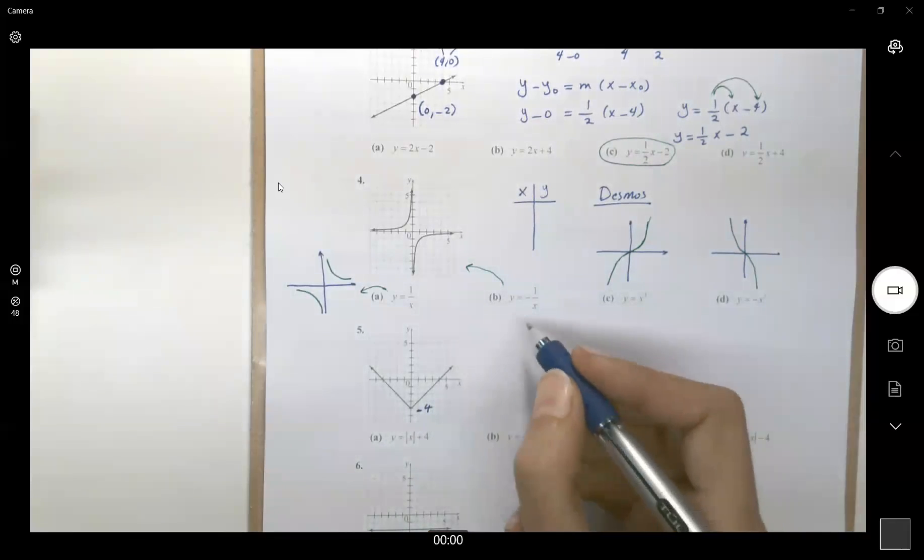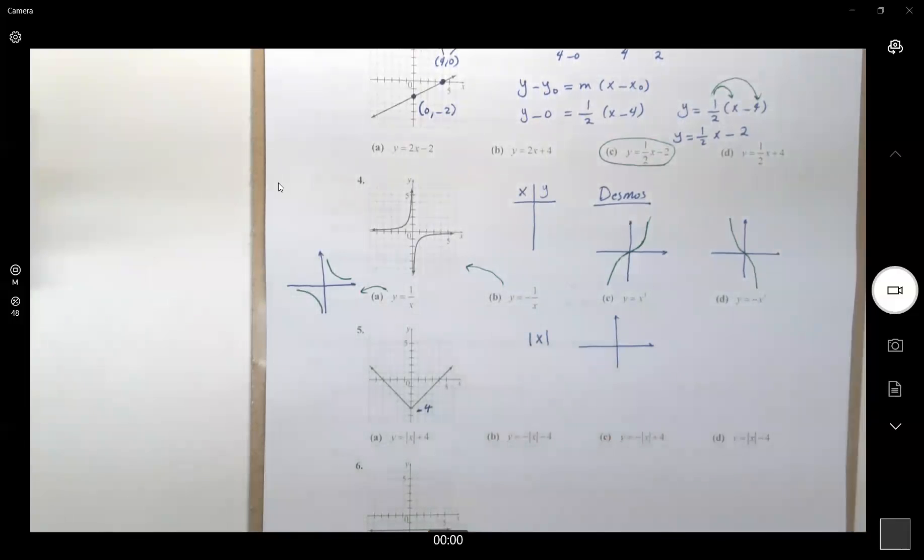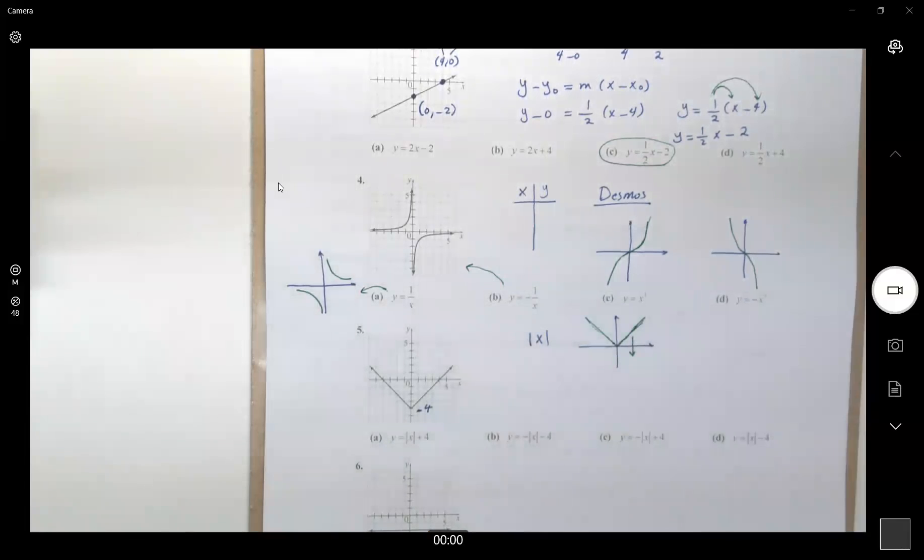So we have the absolute value function. We know that the absolute value function behaves like this. It's just a v-shaped graph. But we are taking this graph and shifting it 4 units downward. It means that now the graph is absolute value of x, 4 units downward, minus 4.